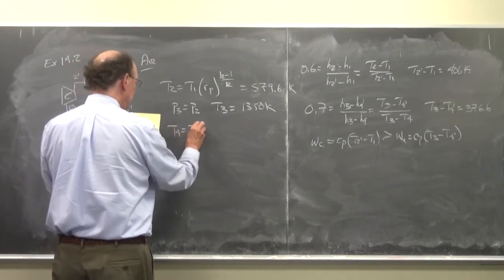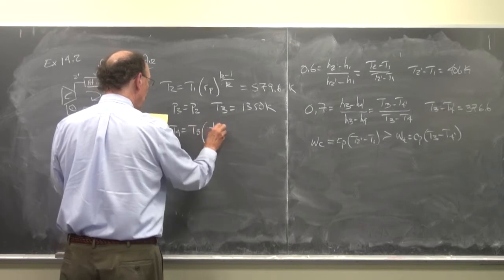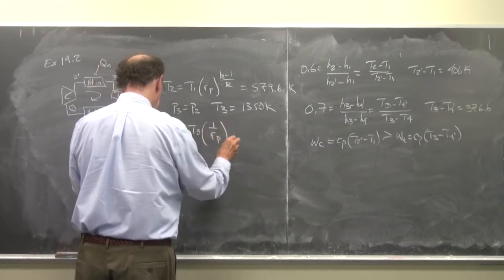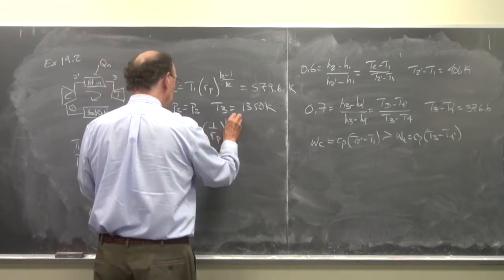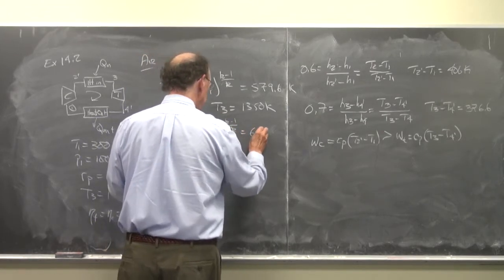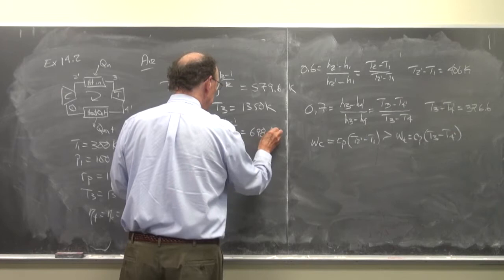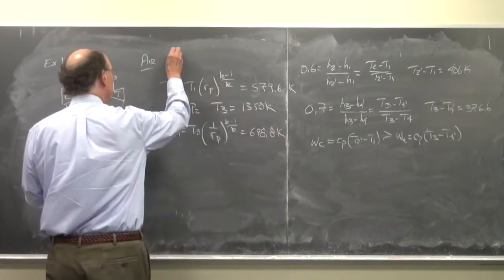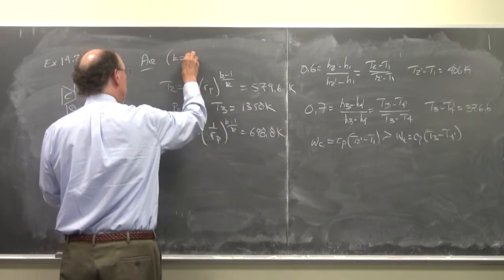T4 is equal to T3 times 1 over r sub p to the k minus 1 over k, so that's equal to 698.8 degrees K, and here k is equal to 1.4.